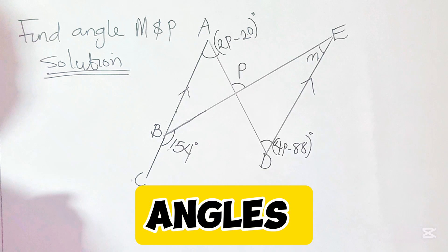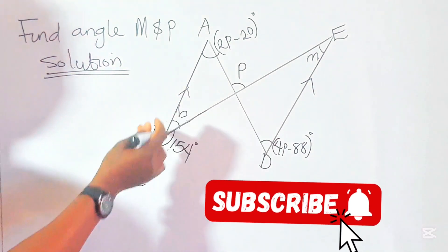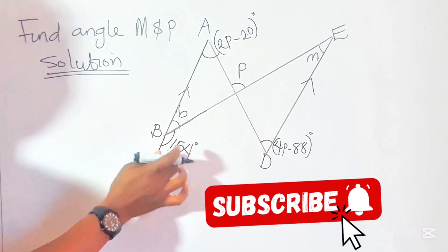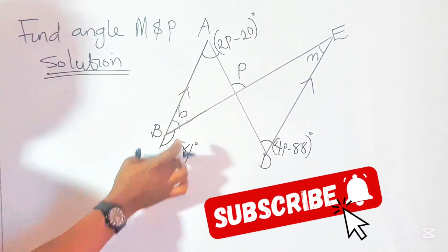The first angle we'll find here is this missing angle. Let's call it angle B. This angle B here shares a relationship with 154 because they are angles on a straight line.